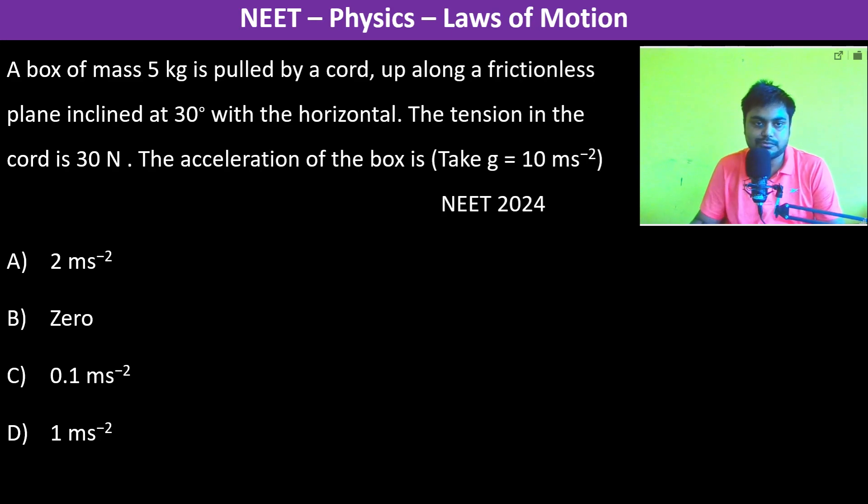A box of mass 5 kg is pulled by a cord up along a frictionless plane inclined at 30 degrees with the horizontal.